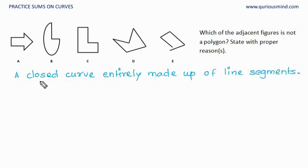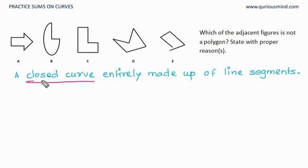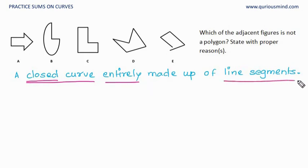A polygon is a closed curve — closed is very important — entirely made up of line segments. We need to remember these when we are classifying them.